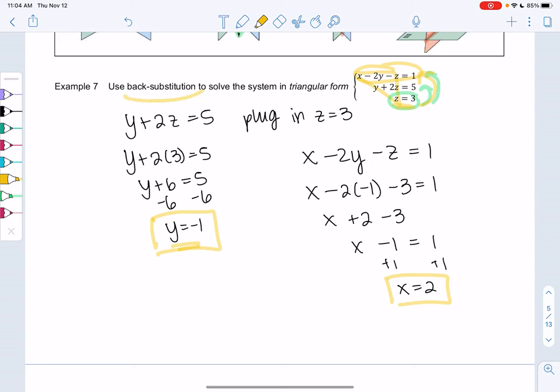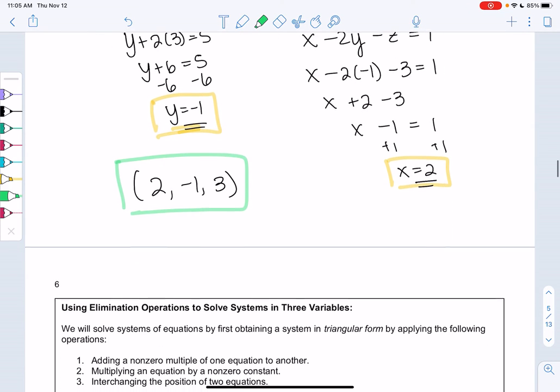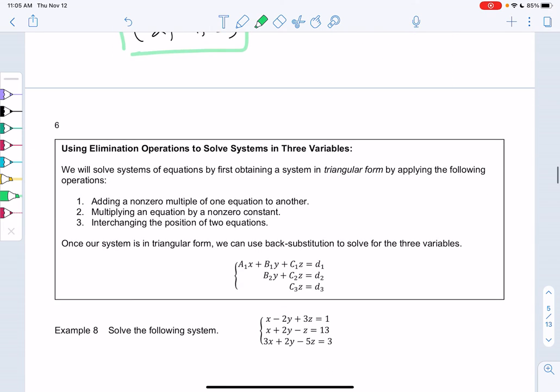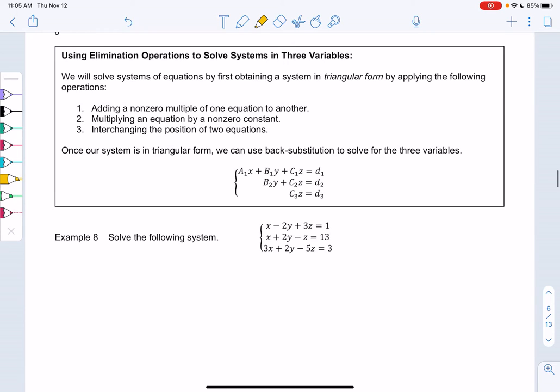So that's what back substitution is. And so we'll write the solution as two, comma negative one, comma three, and that's an ordered triple. And you could plug those in to check your answer. So in the next example, we're going to try to get this triangular form so that we can do this process. Many times we're not in triangular form yet. So we can use those elimination type operations to solve a system in three variables.